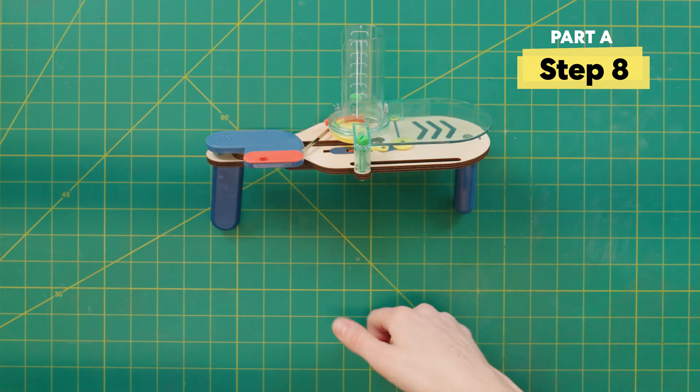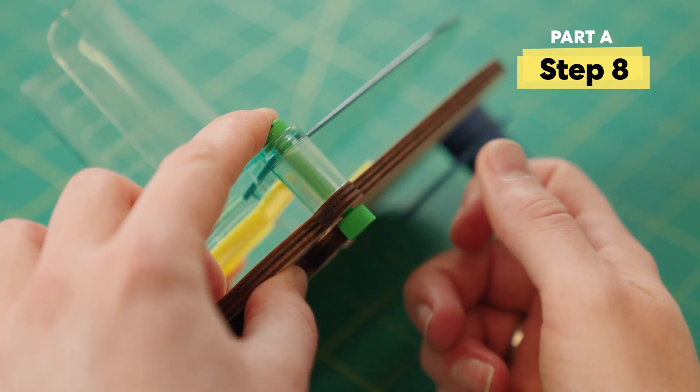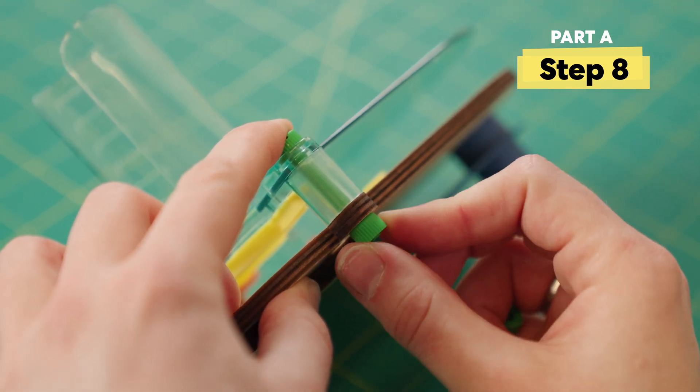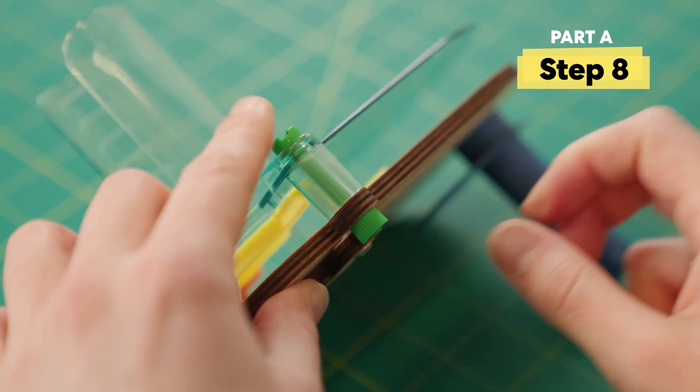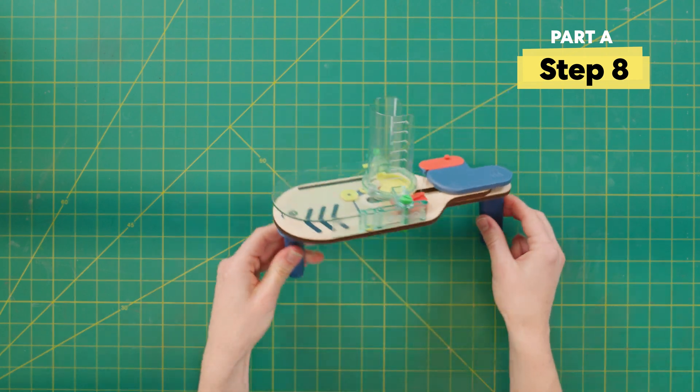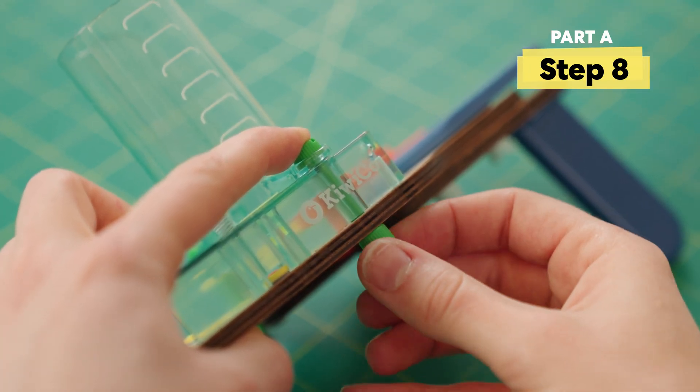Get two nuts and screw it down really tight. Just like everything else on this build, make sure it's really snug. There's a ton of forces going into this disc launcher, so you want to make sure that everything's nice and secure.